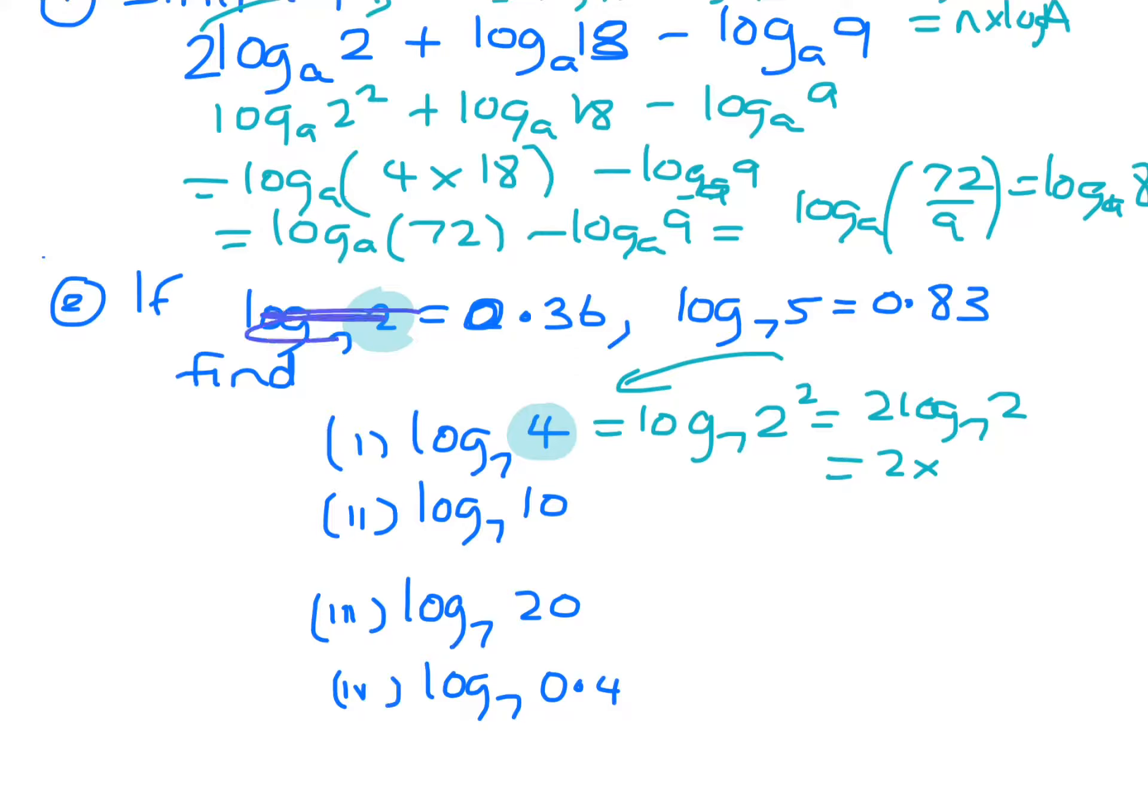What's log 2 base 7? Sorry, I'm just going to get another highlighter color. So you can see that log 2 with a base 7 will be equal to 0.36. So 2 times 0.36 is 0.72.